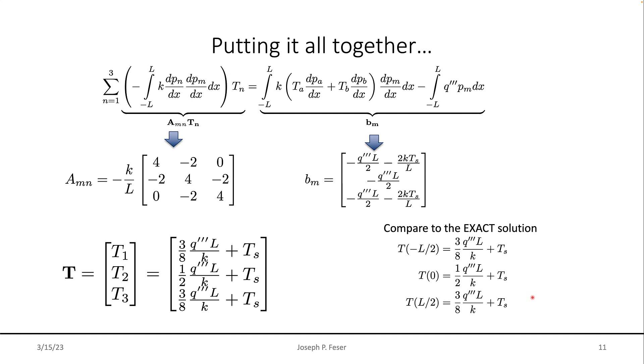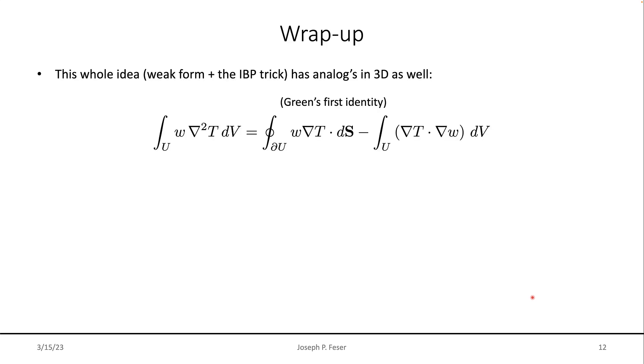So the finite element method is really good in that way. Now it doesn't get the correct answer anywhere in between the nodes because it has to do an interpolation in between. You might have the correct value at the nodes, but it won't get the correct interpolation in between. But as long as you use a small set of nodes.